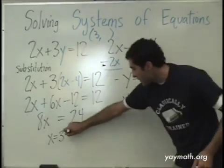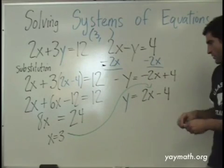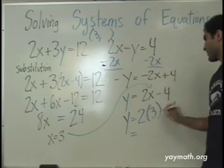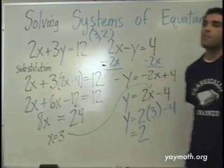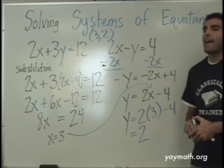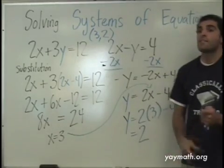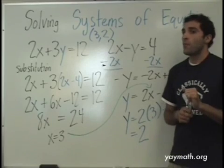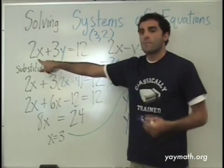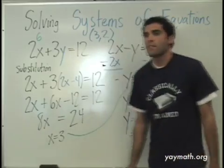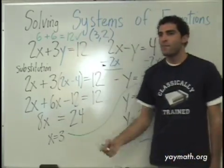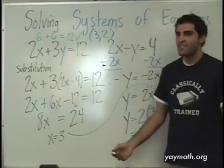We plug x equals three into y equals two x minus four. y equals two times three minus four, equals six minus four, equals two. So the answer is the point (3, 2). That means three, two is where those two lines meet — and it's the only point that works in both equations. Let's verify: two times three plus three times two — six plus six equals twelve. Correct! You can check your own answer on a test before handing it in.